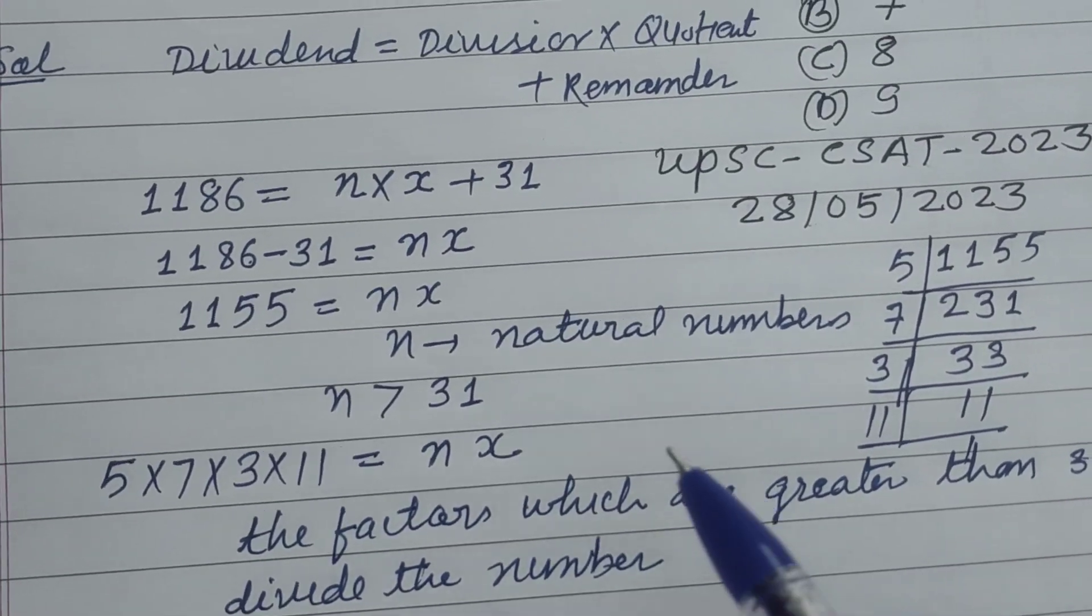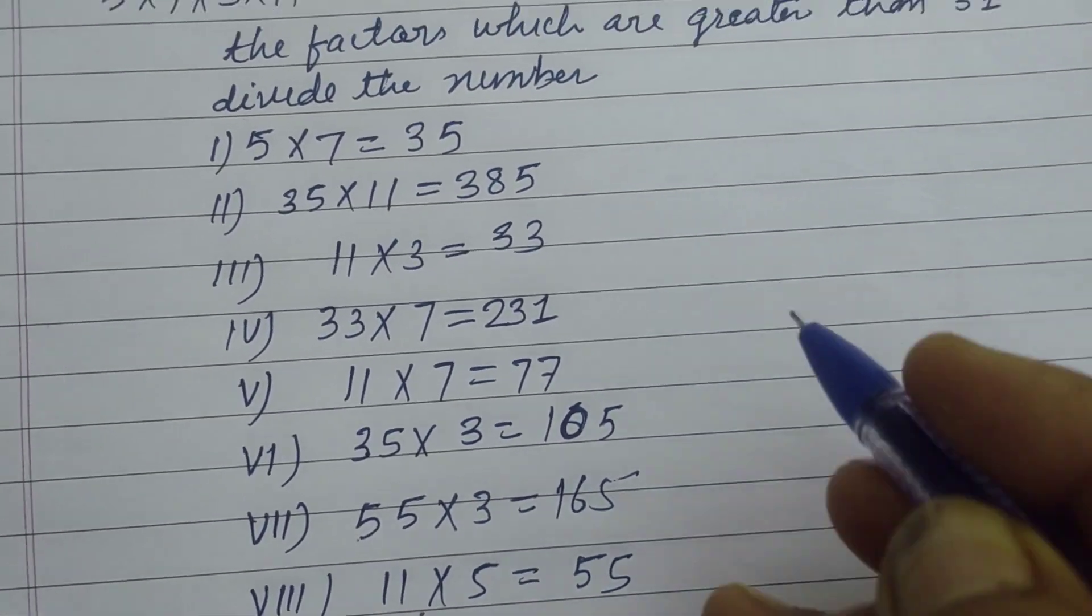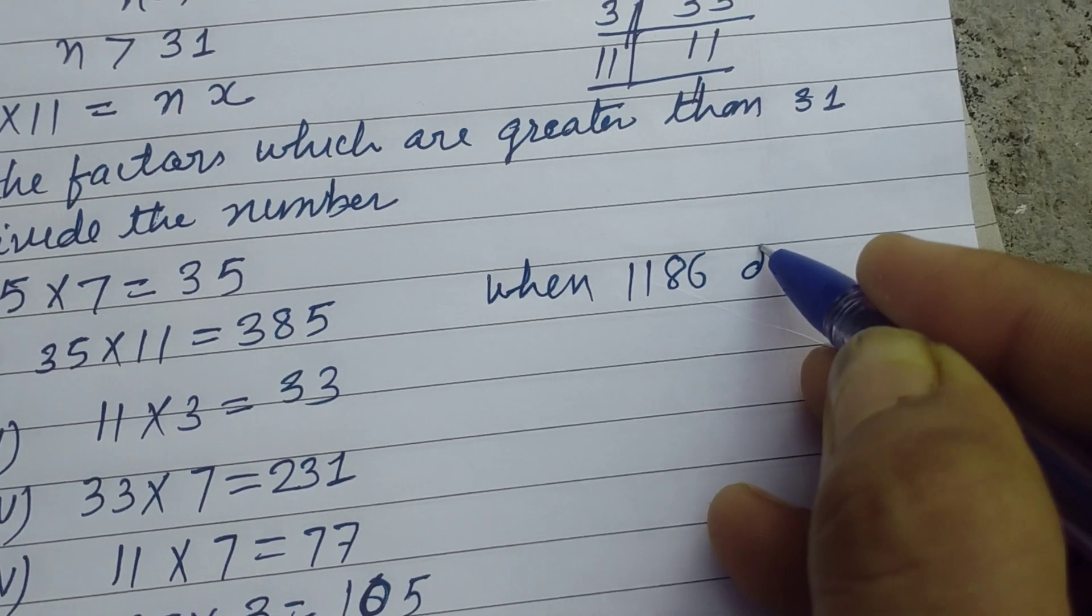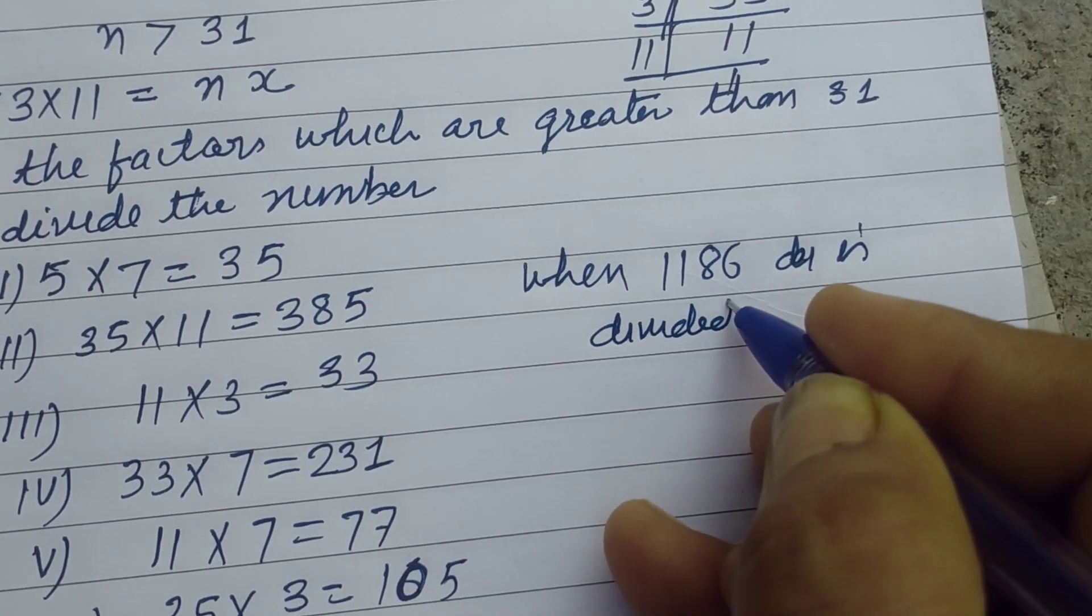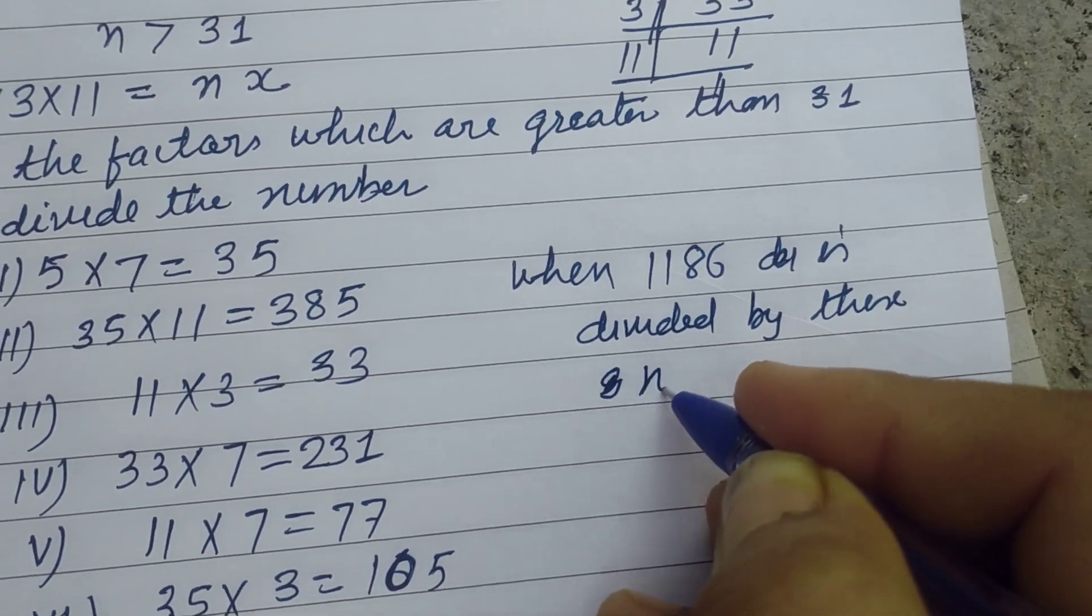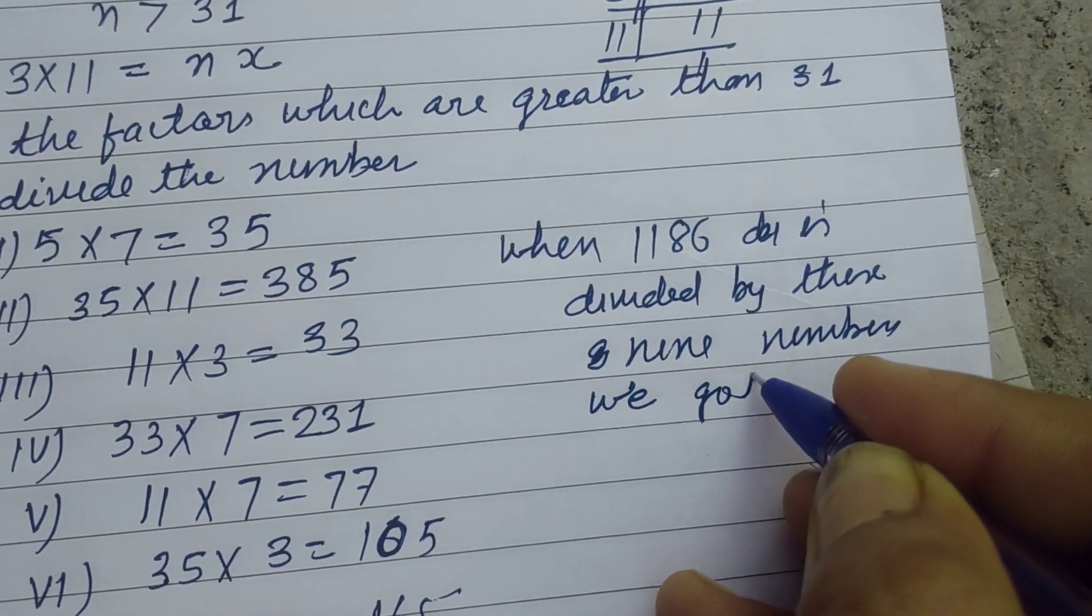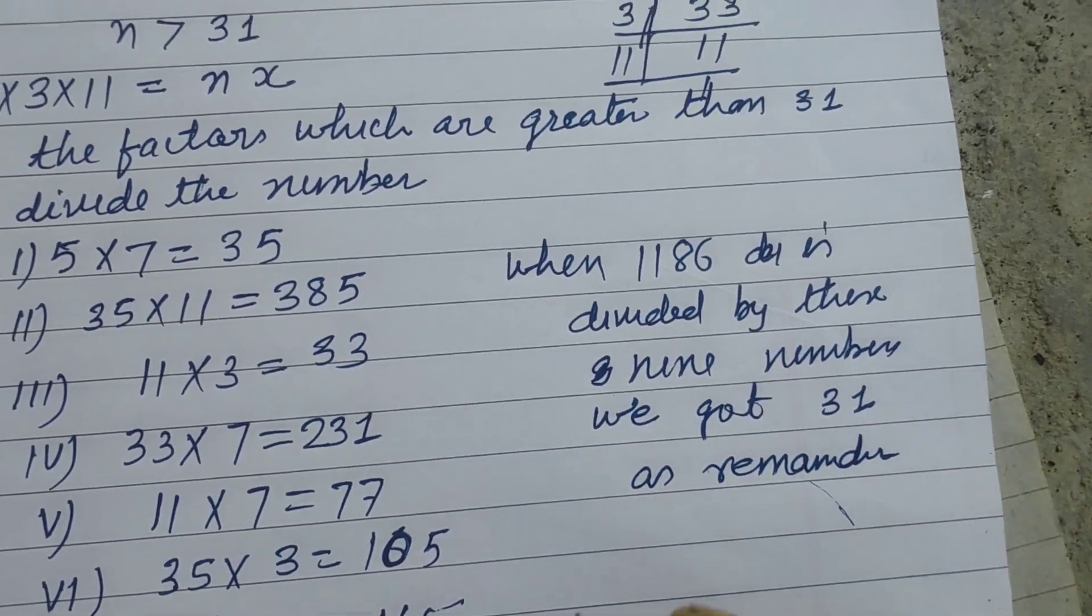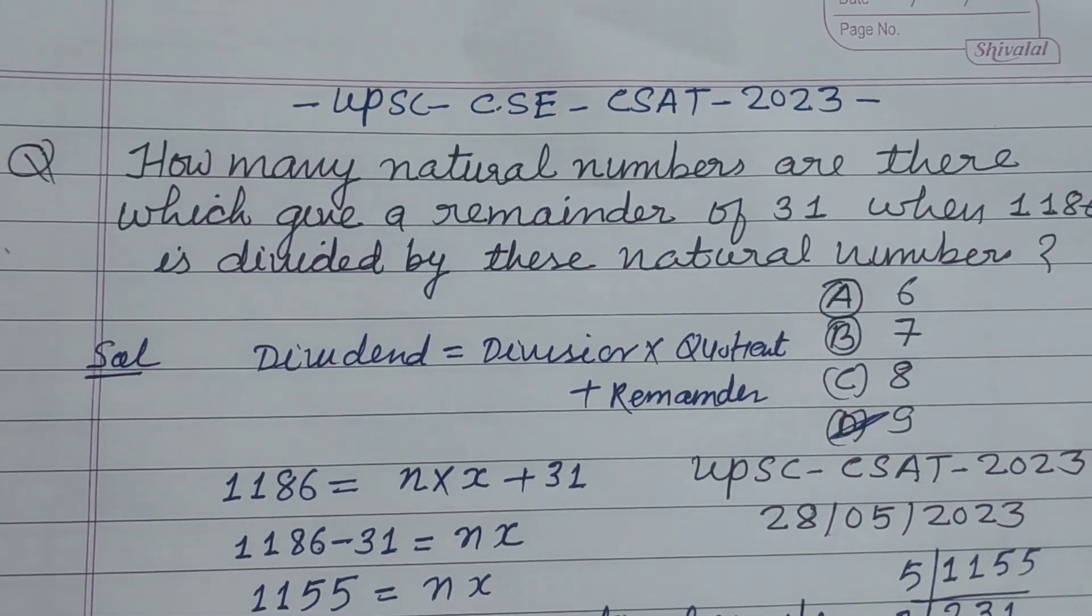When we divide 1186 with these numbers, when 1186 is divided by these nine numbers, we get 31 as remainder. Therefore the answer is nine for this question.